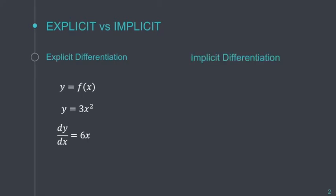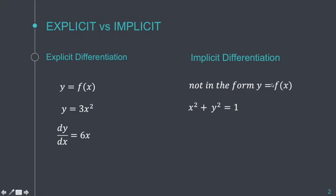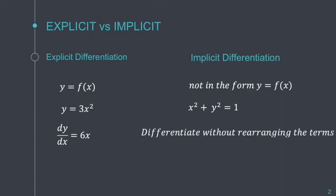Now, what about implicit differentiation? If the function is not written as y = f(x), we can still differentiate it — but not explicitly, but implicitly. For example, the equation of a unit circle is x² + y² = 1. This is not written in y = f(x) form because a unit circle is not a function. But we can still differentiate this without rearranging the terms — that's what we call implicit differentiation.